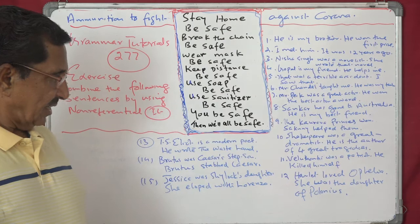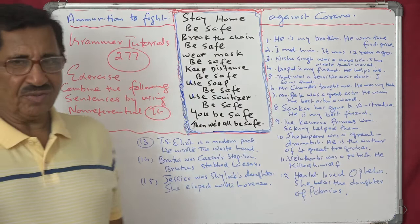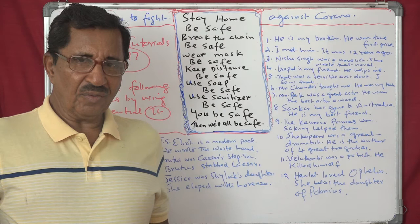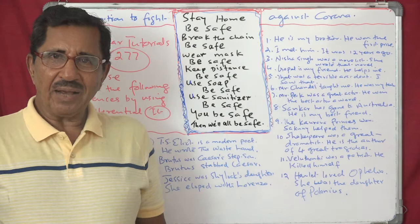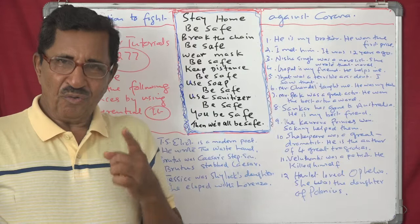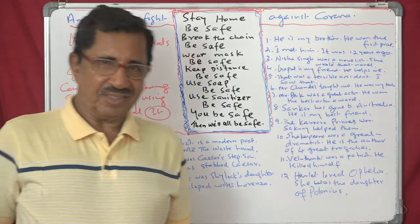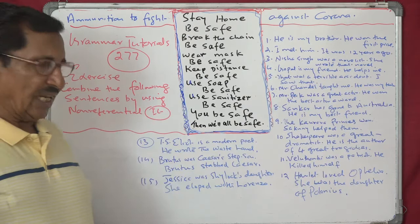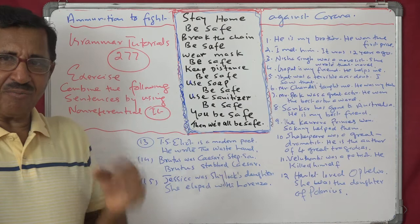'Hamlet loved Ophelia. She was the daughter of Polonius.' Combined: 'It was Ophelia, the daughter of Polonius, whom Hamlet loved.' Also: 'He is a modern poet. He wrote The Wasteland.' Combined: 'It is the modern poet who wrote The Wasteland.'